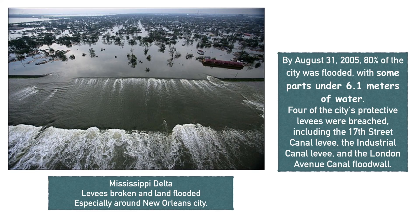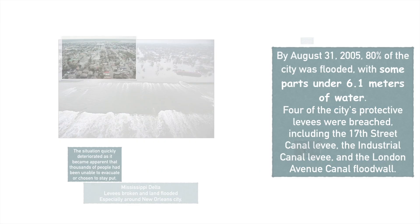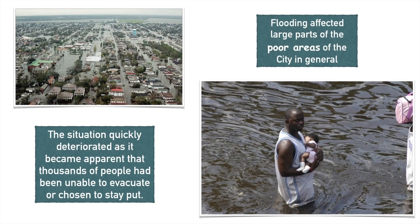By August 31st, 80% of the city was flooded, with about 6.1 meters of water in certain areas. This large-scale flooding affected mainly the poor parts of the city, and the situation quickly deteriorated. Thousands of people were unable to evacuate.